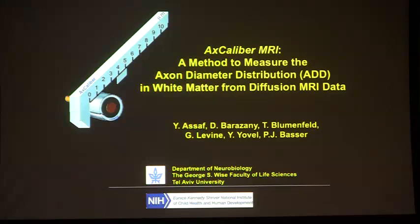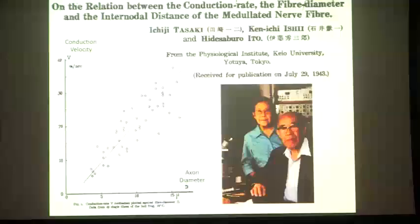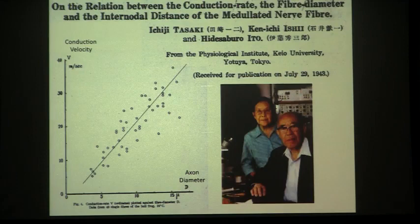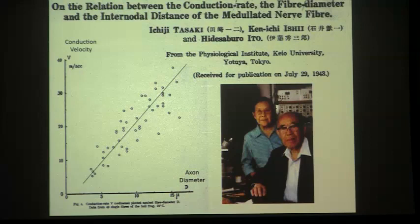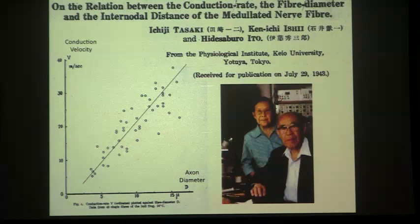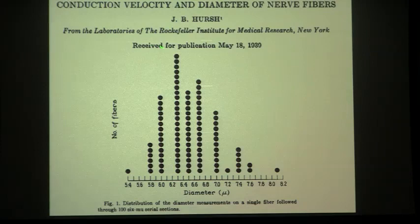Another area of work involves axonal structure — axon diameter measurements and diameter distribution measurements — initiated with Yaniv Assaf, now professor at Tel Aviv University, who was previously a postdoc in the lab. This is based on classical neurophysiology findings: Ichiji Tasaki and his wife showed a linear relationship between axonal conduction velocity and axon diameter — almost textbook knowledge now. Hirsch showed that axons don't come in one size but have a diameter distribution in the peripheral nervous system, and Albrecht and others demonstrated this in the central nervous system.